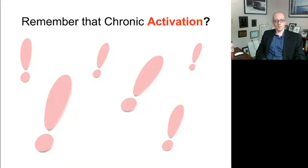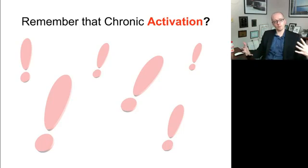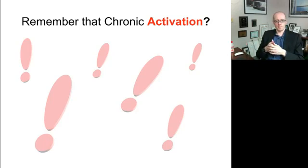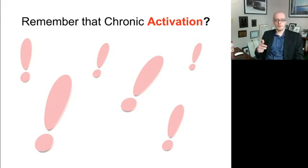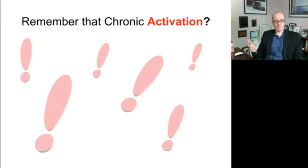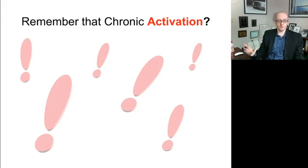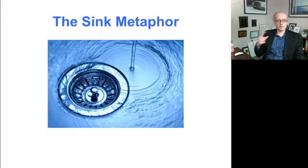On top of that, chasing after HIV creates chronic immune activation. Immune cells try to kill HIV, they fail, and they eventually get programmed to die. Then more immune cells come to try to clean up the mess that the first ones didn't clean up, and that happens over and over again. So you're having this process of continual loss of cells.